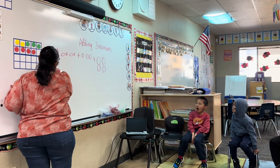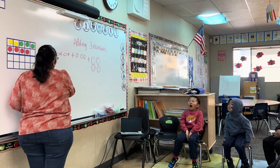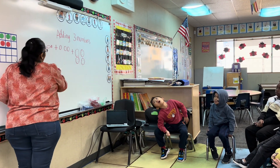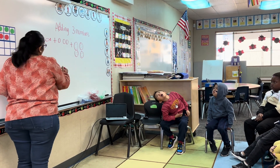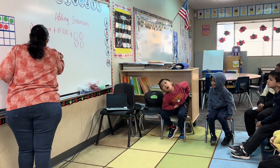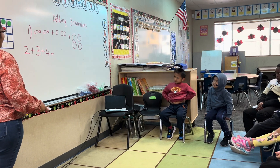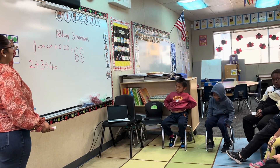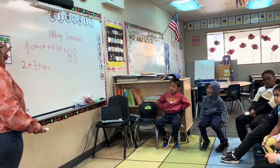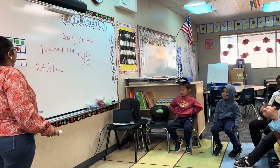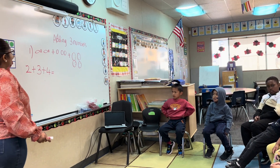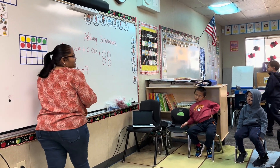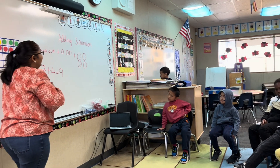So Ms. K has two goldfish crackers, three gummy bears, and how many chocolate chip cookies? Four. So let's count. One, two, three, four, five, six, seven, eight, nine. So Ms. K has nine in total.